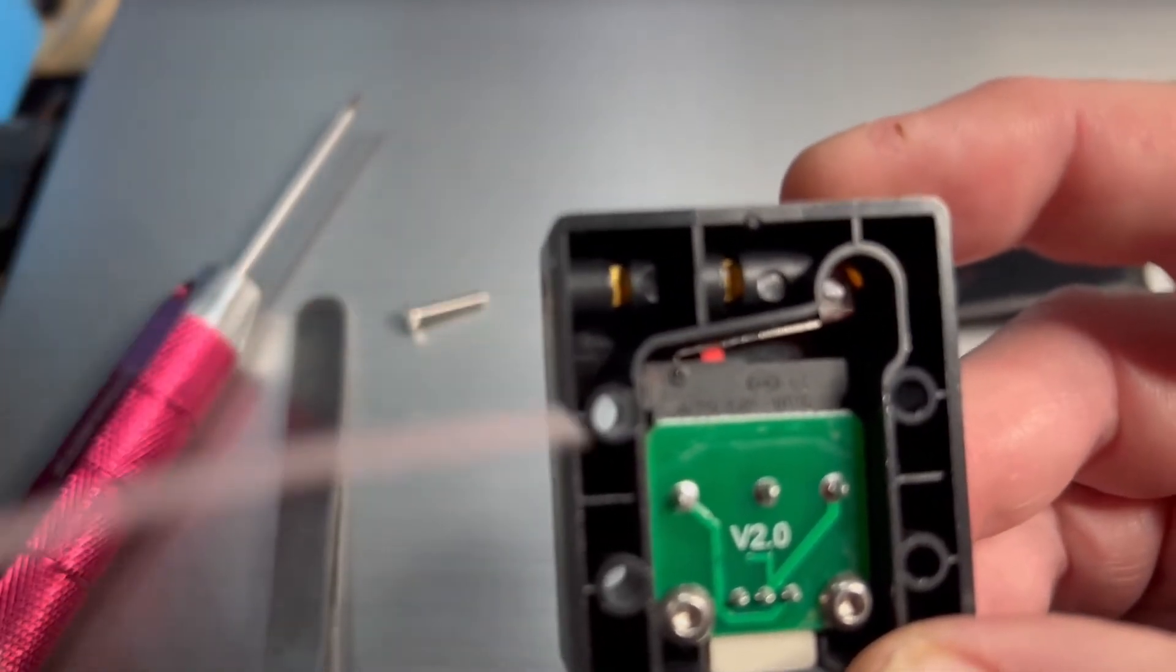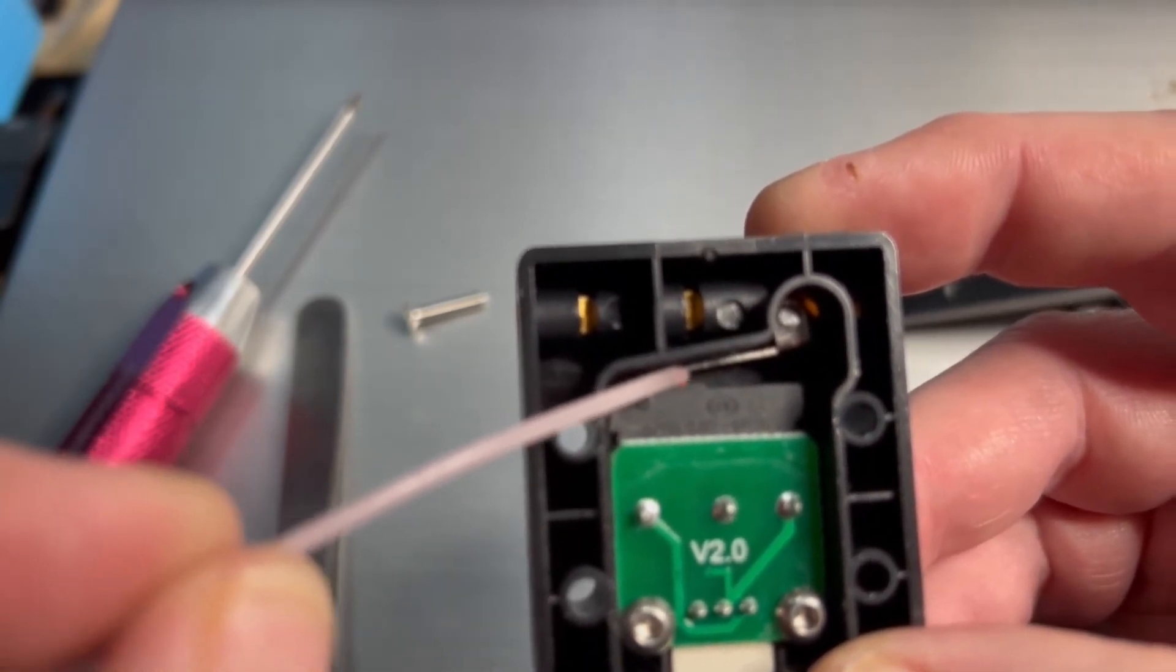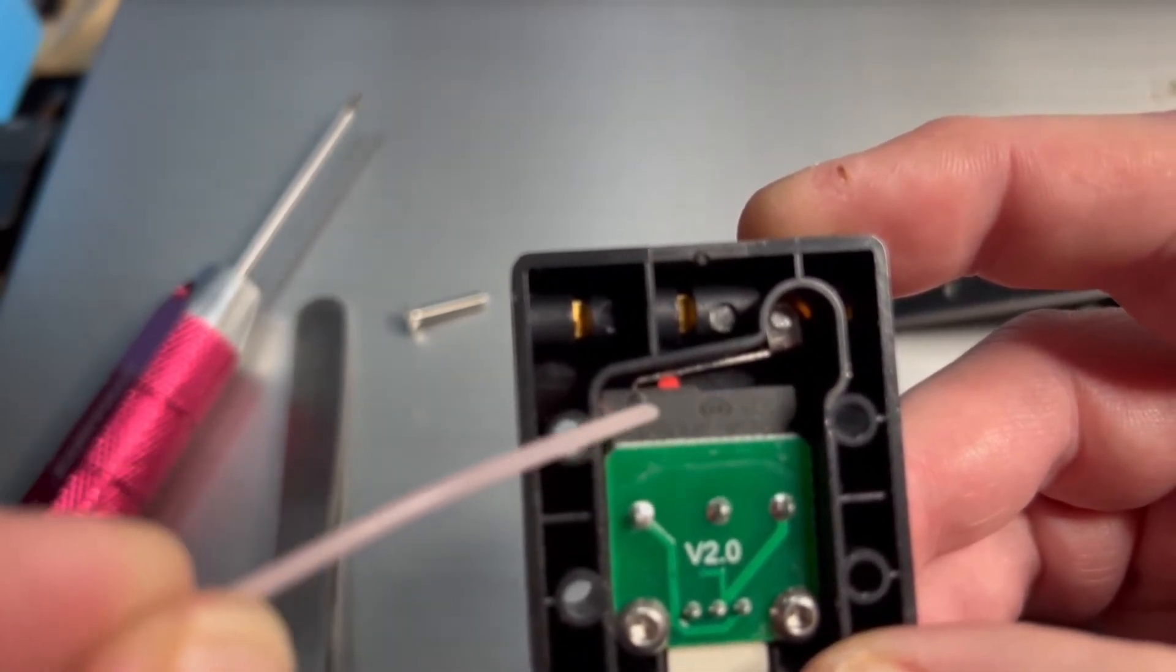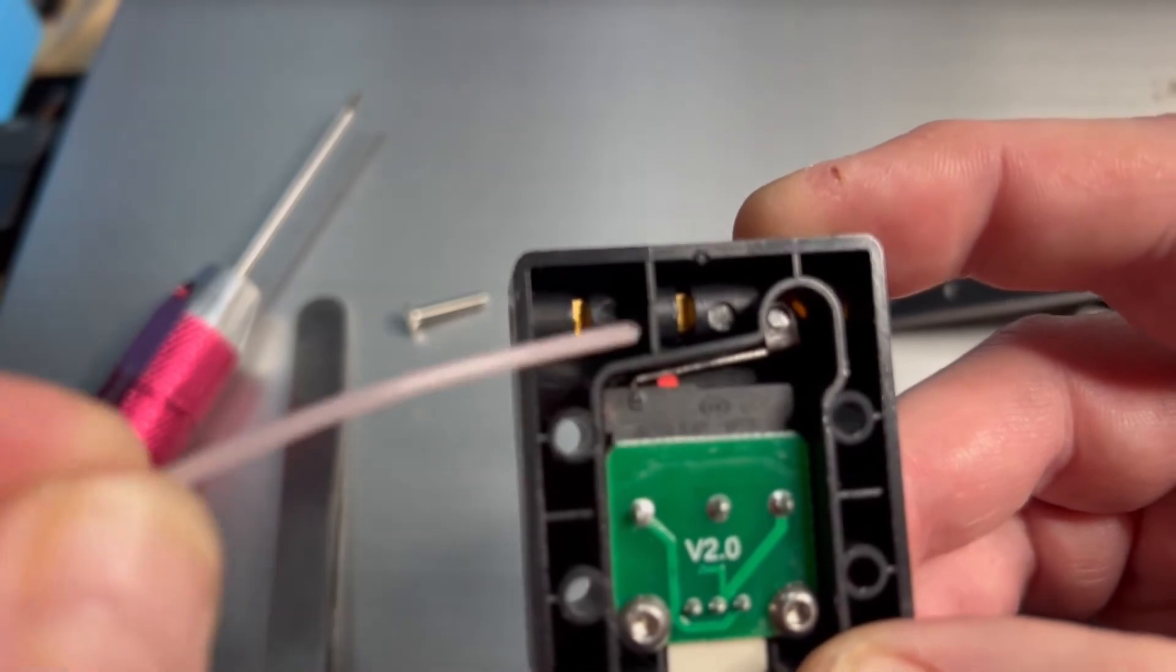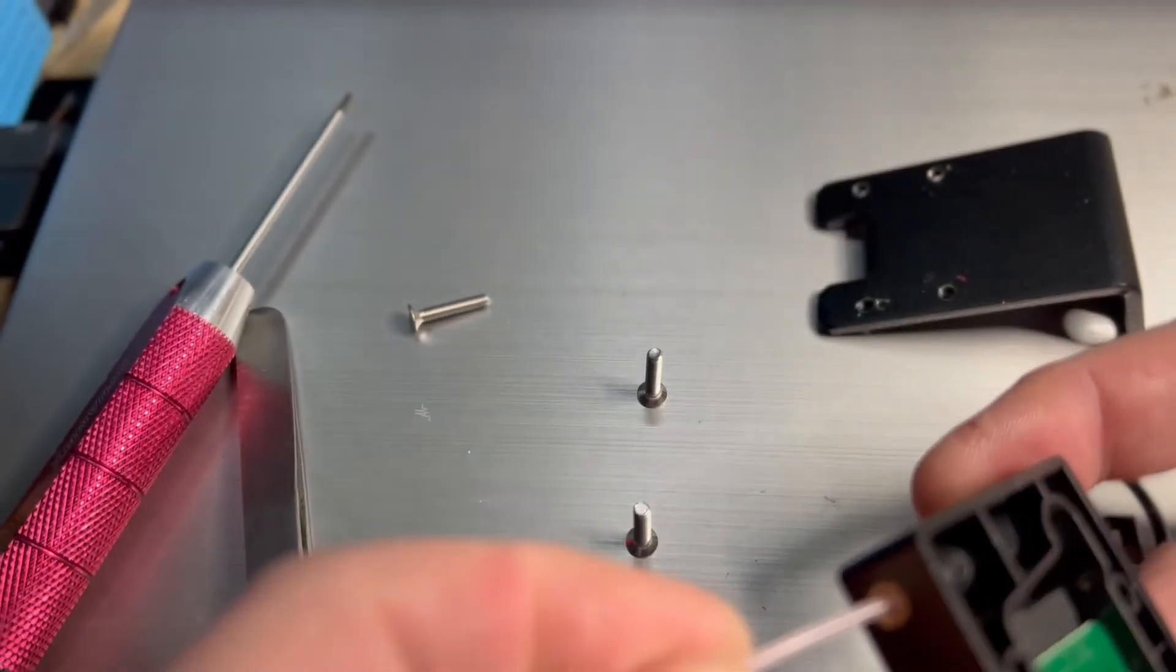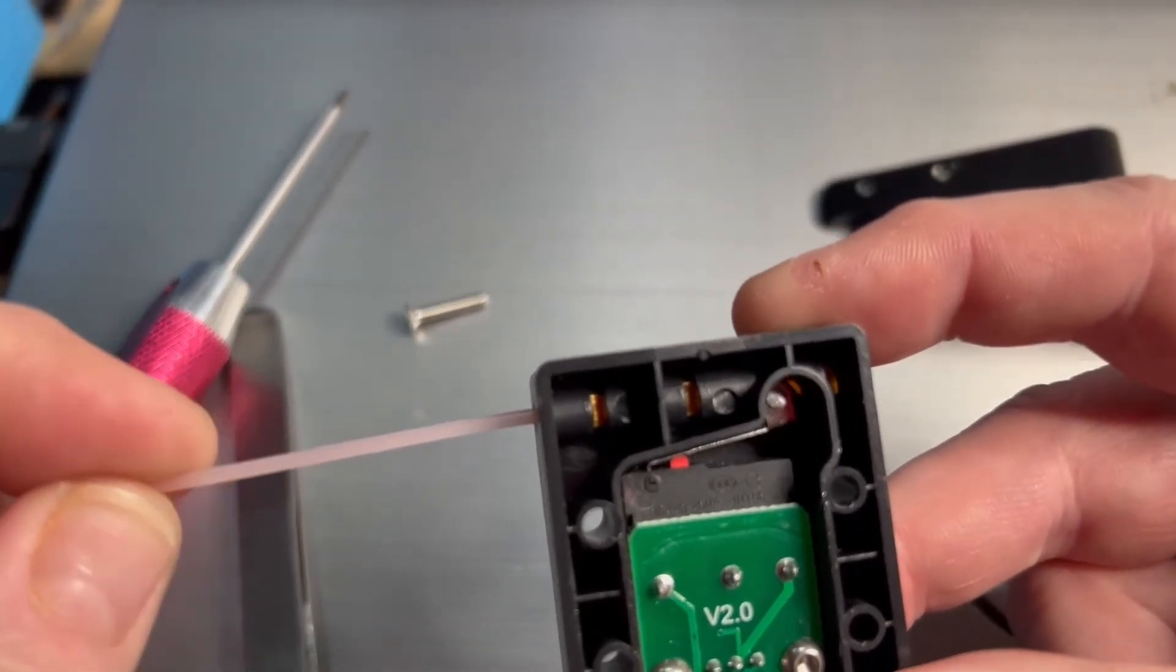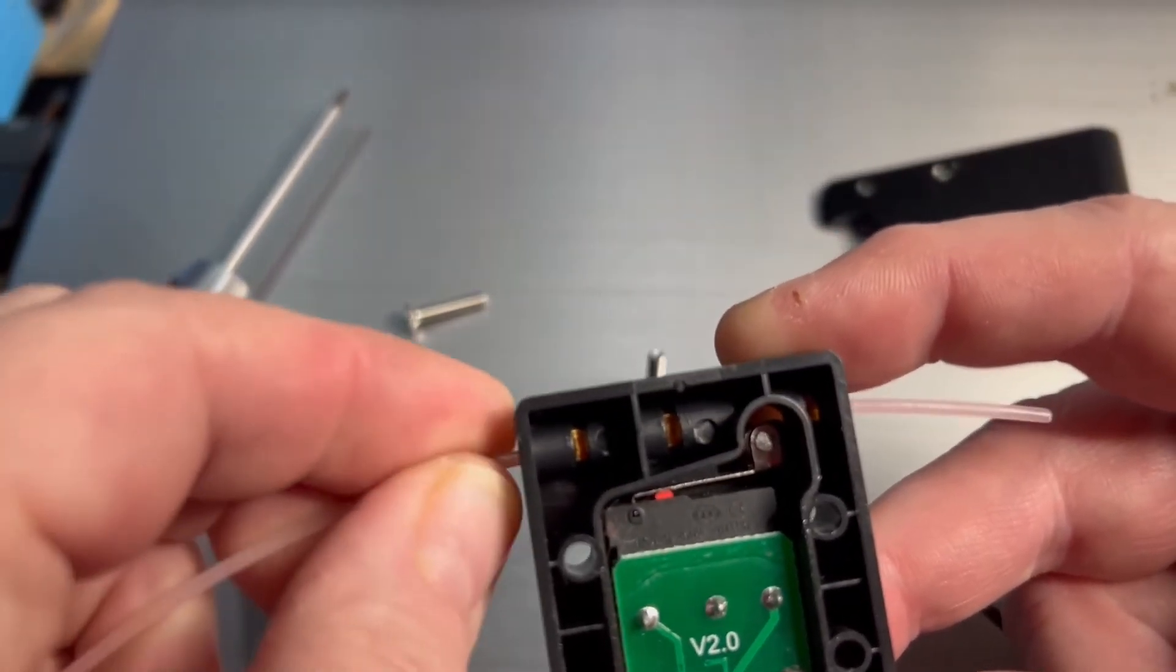You can see the little, this is the lever arm. This is the little switch right here. They call these like cherry switches or micro cherry switches. So you just, like I said, this filament comes up in here. So that's it.